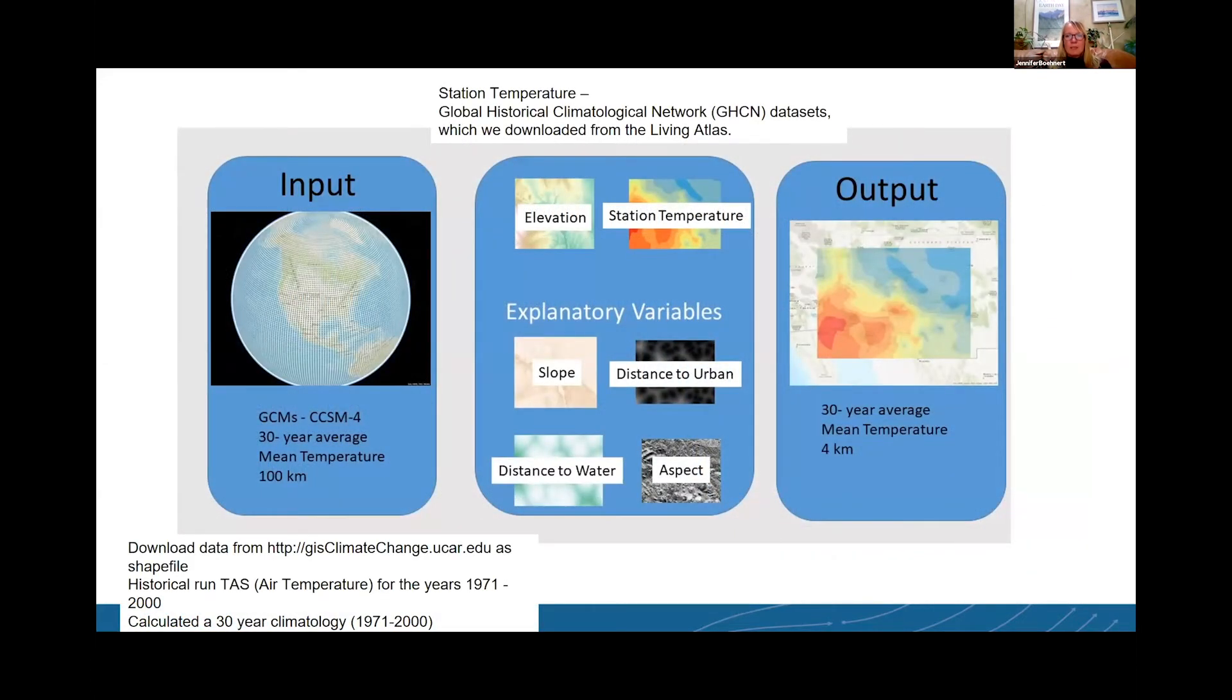The workflow that we went through: our input data was CCSM. So NCAR ran a model for the fifth assessment report, the community climate system model. We took this data, which you can also get access to from gisclimatechange.ucar.edu as a point shapefile. We took the historical run for air temperature. We wanted to do a 30-year climatology instead of just taking one year. So we took the years 1971 to 2000 and we computed a 30-year climatology for the months of January, April, July, and October.